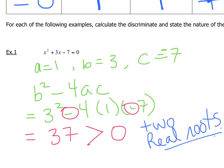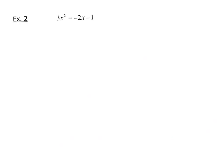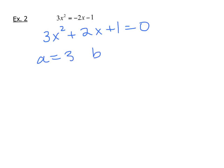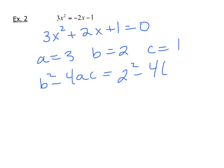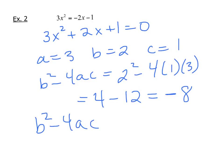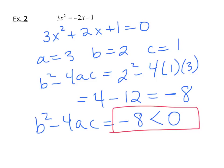Moving on to the next question, we need to make sure the equation is written properly with everything on one side, equal to zero. Then we've got a equals three, b equals two, c equals one. b squared minus 4ac is equal to 2 squared minus 4 times 1 times 3. We end up with 4 minus 12, which gives us negative 8. Since b squared minus 4ac equals negative 8, which is negative, we can say that there are no real roots.